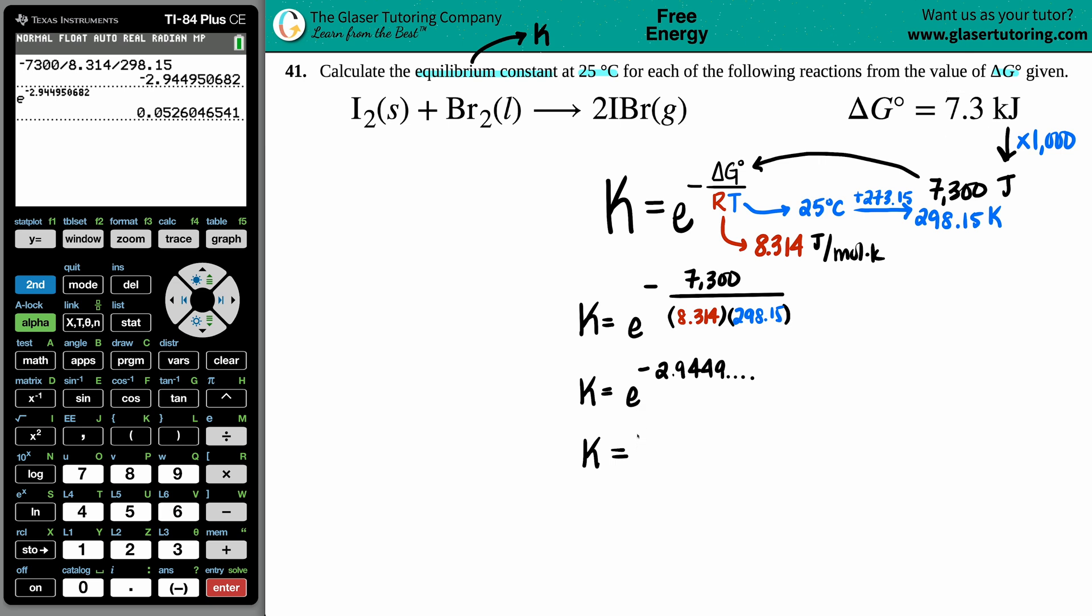I'm only allowed two sig figs. I can put this in scientific notation. You don't have to if you don't want to, but this would be 5.3 times 10 to the negative 2, or you could have said 0.053. It would be the same exact value, and you're done.